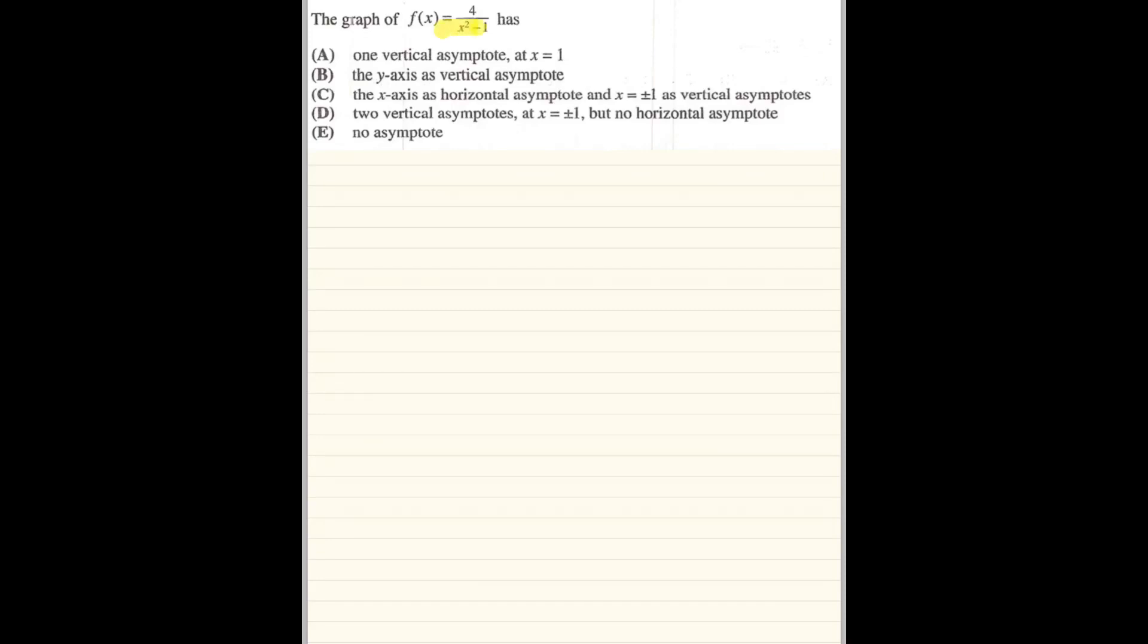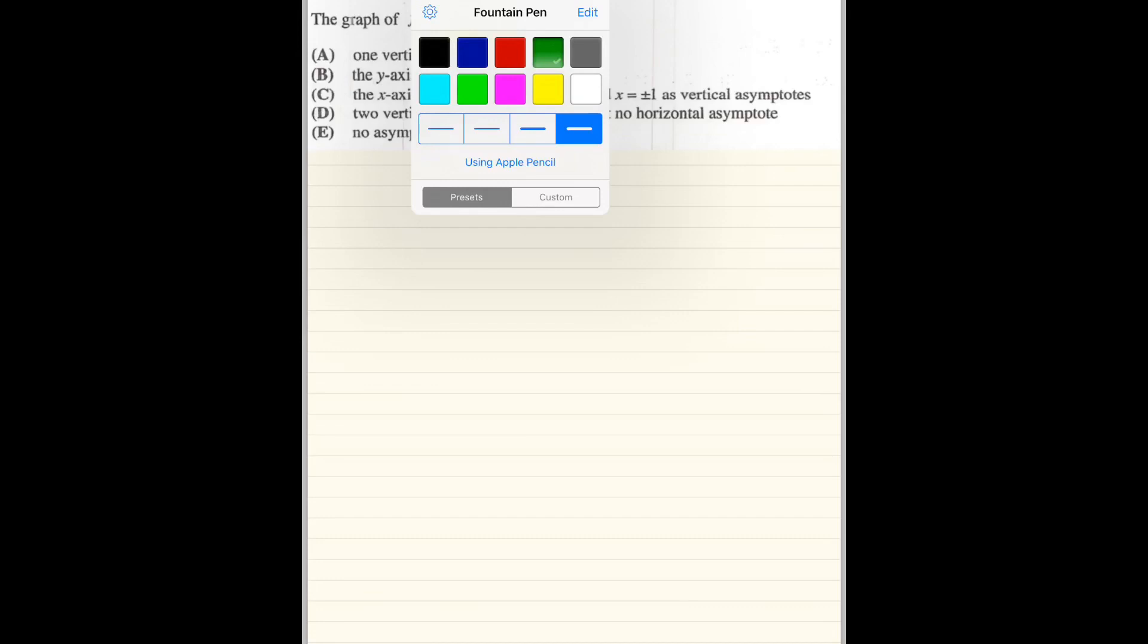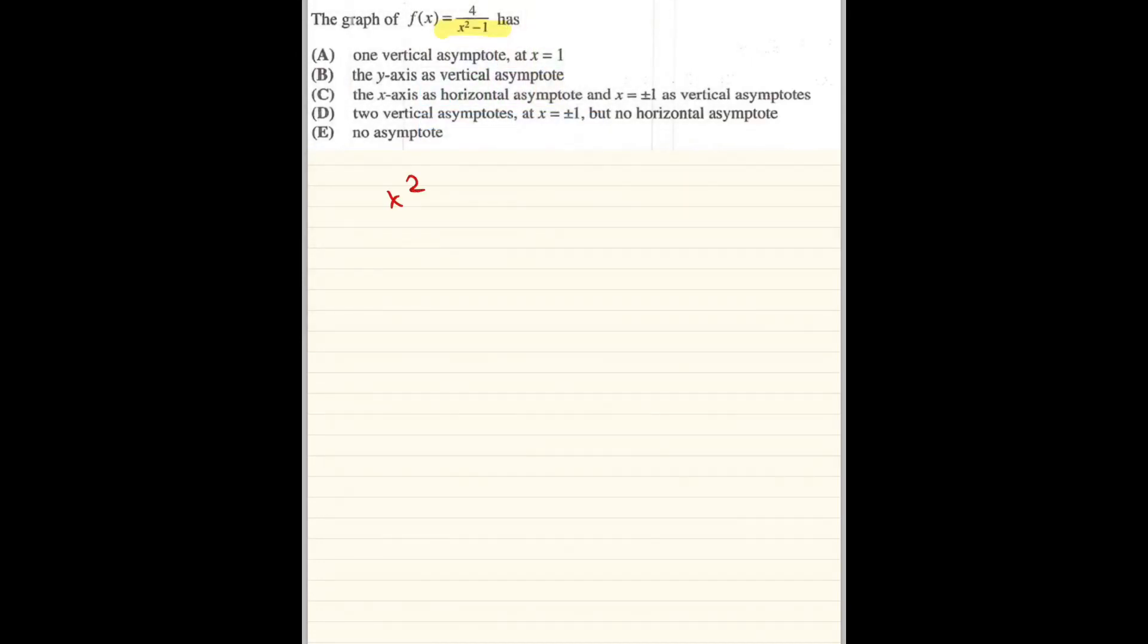Right now, I realize that the denominator can be factored, but there's nothing in the numerator that would cancel it out. So I definitely have vertical asymptotes. So when the denominator gets set equal to 0, I see that there's two values that would make that equal to 0, 1 and negative 1. So I definitely have vertical asymptotes at two places.